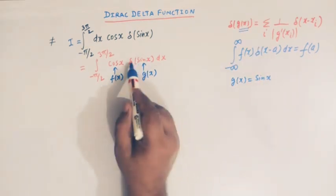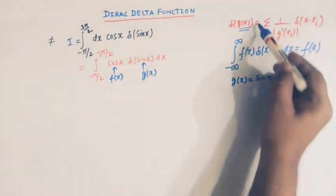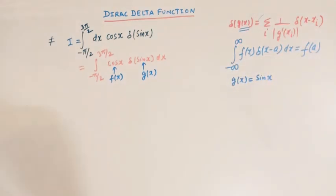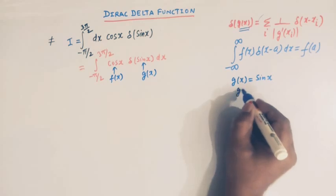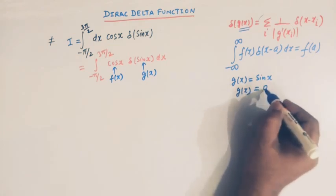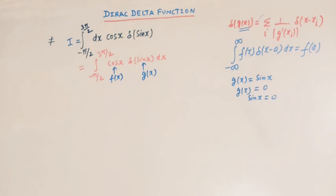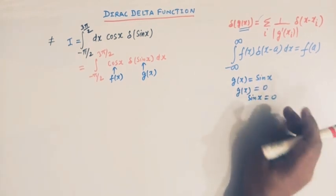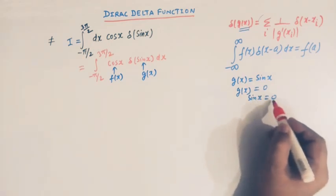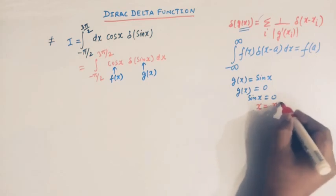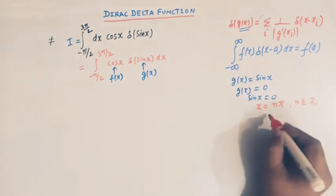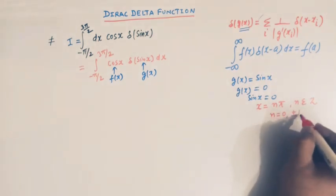We will transform δ(sin x) into the required form. The first step is to solve the equation g(x) = 0, which means sin(x) = 0. The solution of sin(x) = 0 is given by x = nπ, where n is an integer: 0, ±1, ±2, and so on.